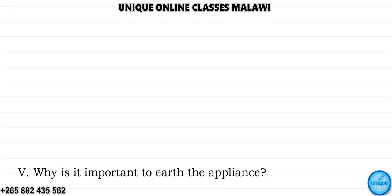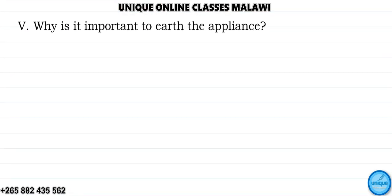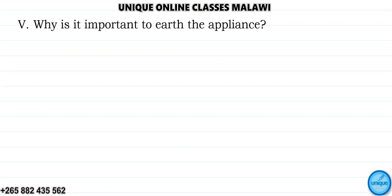The last question asks: why is it important for the appliance to have an earth wire — the green wire — in the plug? The answer is: it is for safety purposes.